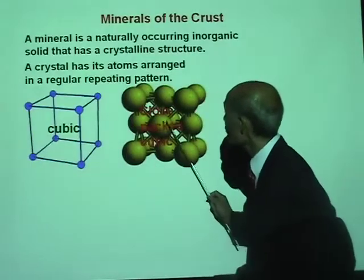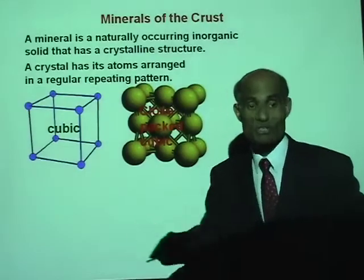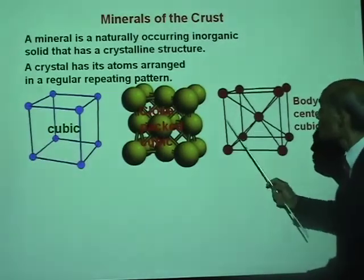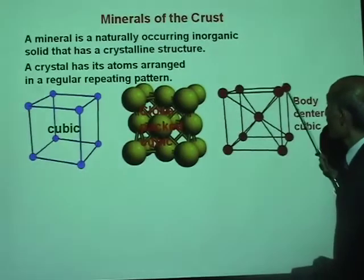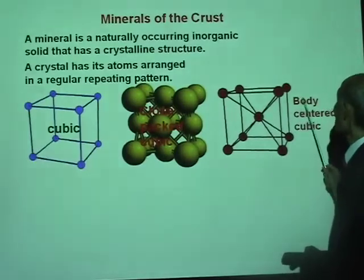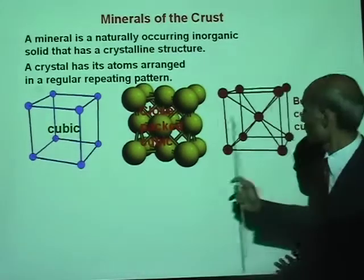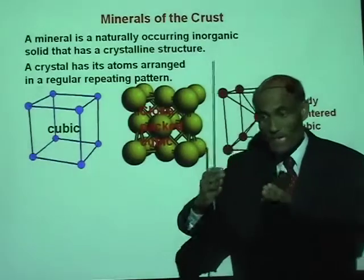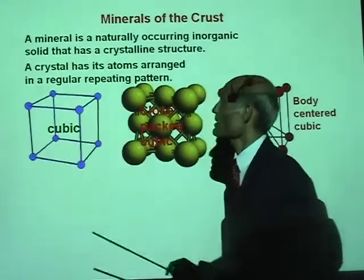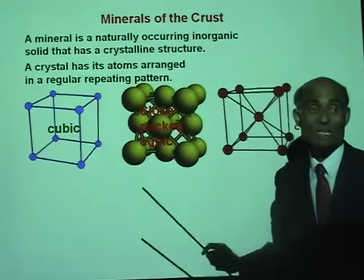Another kind of crystal structure is the body-centered cubic. This is a cubic structure with atoms at all four corners and then one atom at the center of the body. So it is called body-centered cubic. These kinds of fundamental basic structures are repeated and a pattern is built up in the building up of a crystal. So a crystal has its atoms arranged in a regular repeating pattern.